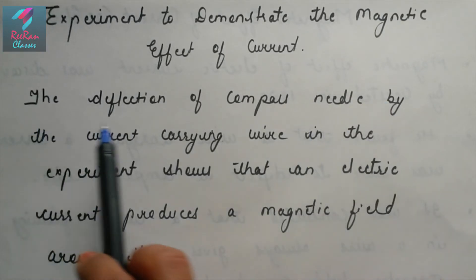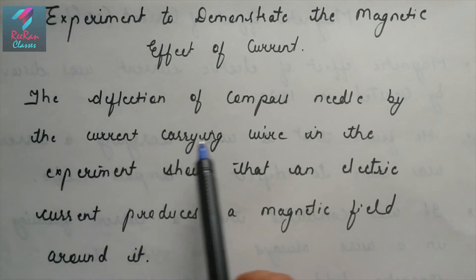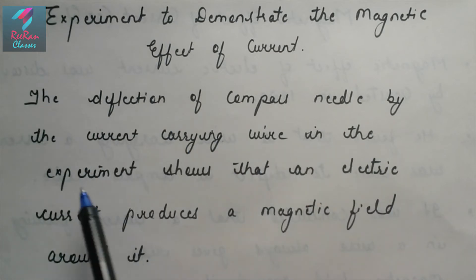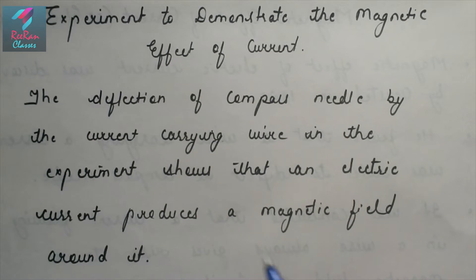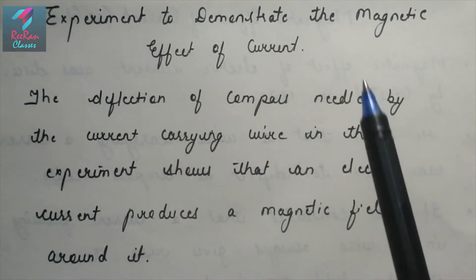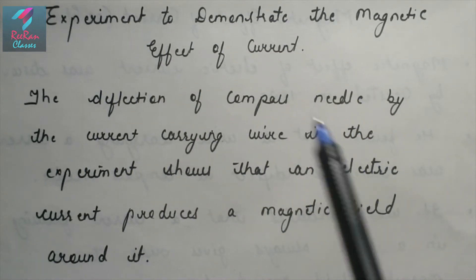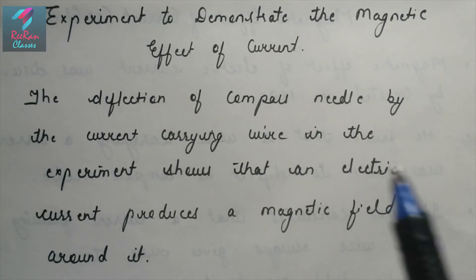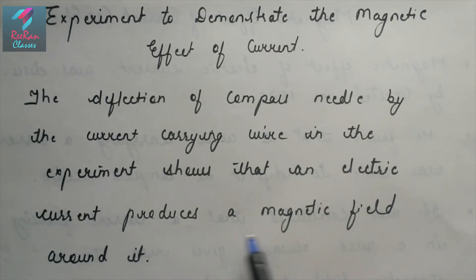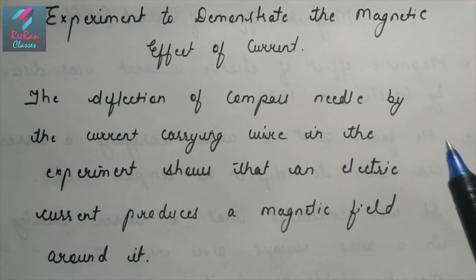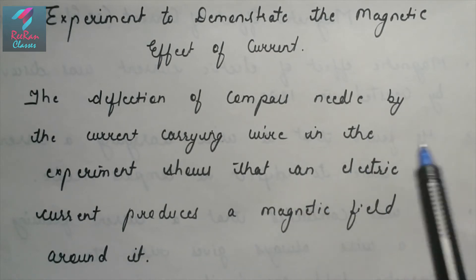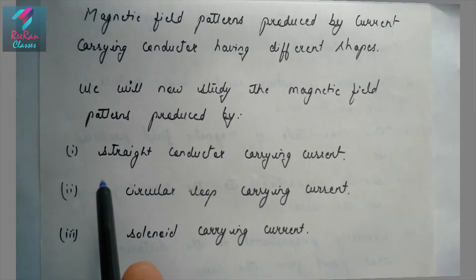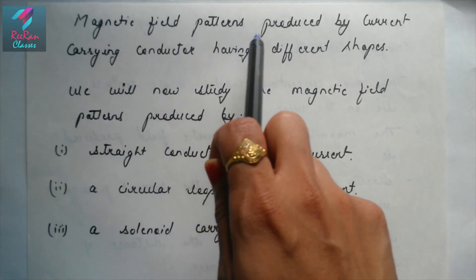This means that somewhere around the wire a magnetic field had developed. The deflection of the compass needle by the current carrying wire shows that an electric current produces a magnetic field around it. Whenever electric current flows in a wire, a magnetic field develops around it.